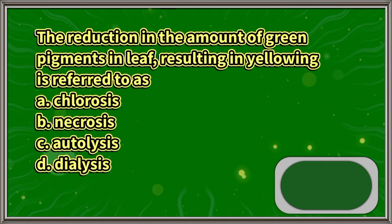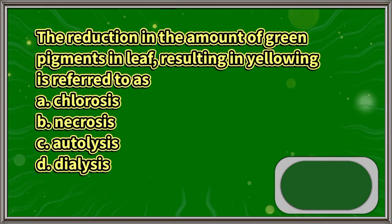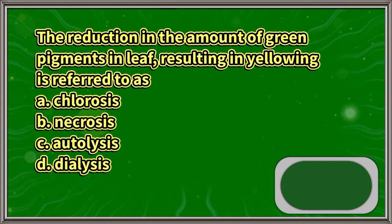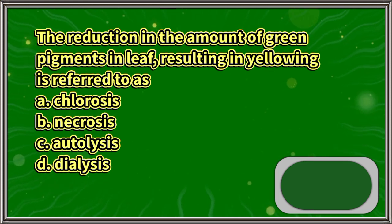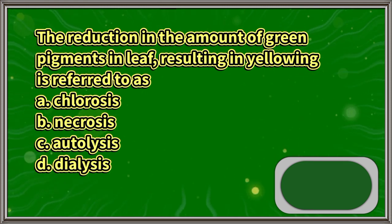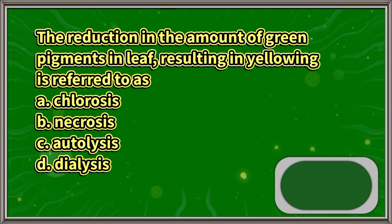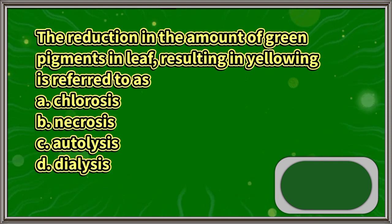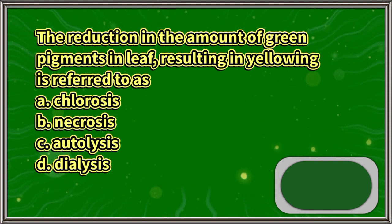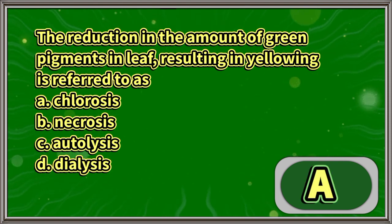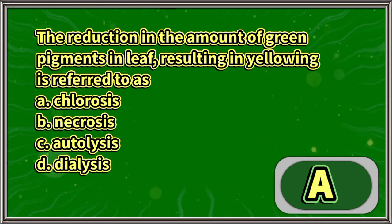The reduction in the amount of green pigments in leaf resulting in yellowing is referred to as: A. Chlorosis. B. Necrosis. C. Autolysis. D. Dialysis. The answer is letter A.